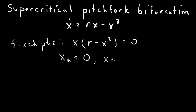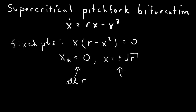So x equals plus or minus the square root of r. The x equals 0 fixed point is valid for all r. But these two fixed points, ±√r, require r to be non-negative — r greater than or equal to 0.